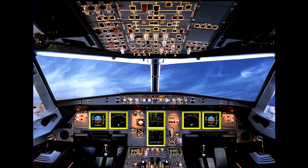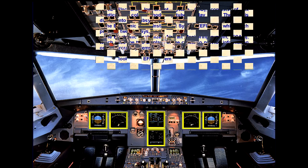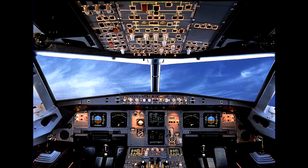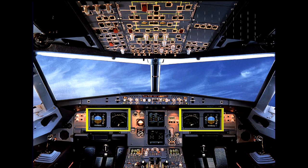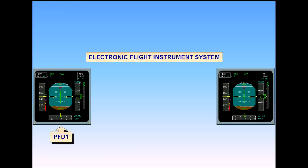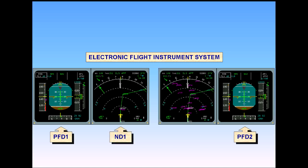Let's look at the EFIS system first. The four EFIS displays provide the pilots with flight data to help them operate the aircraft in a safe and efficient way. Flight parameters are displayed on Primary Flight Displays, PFDs, while navigation data is displayed on Navigation Displays, NDs.